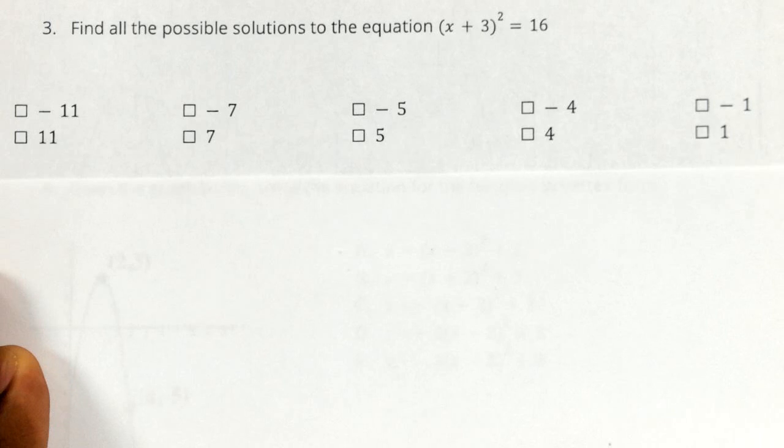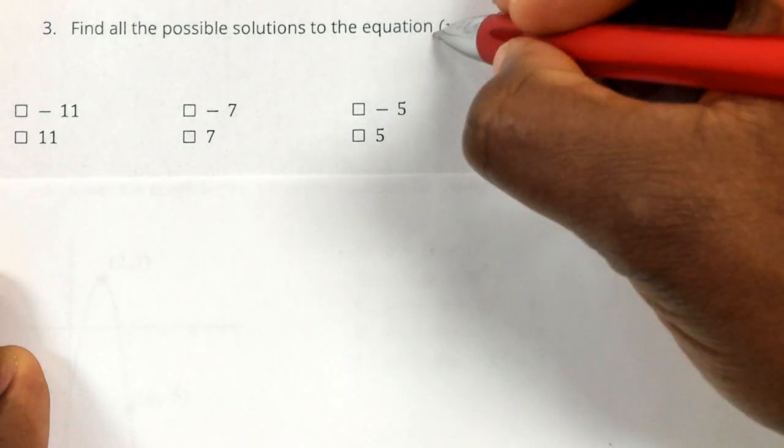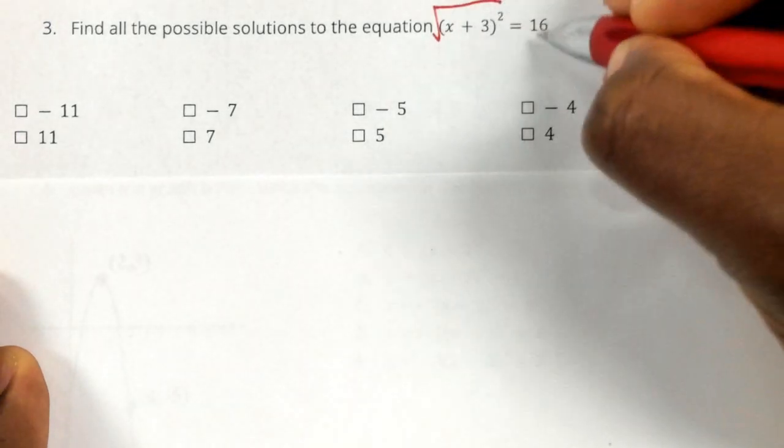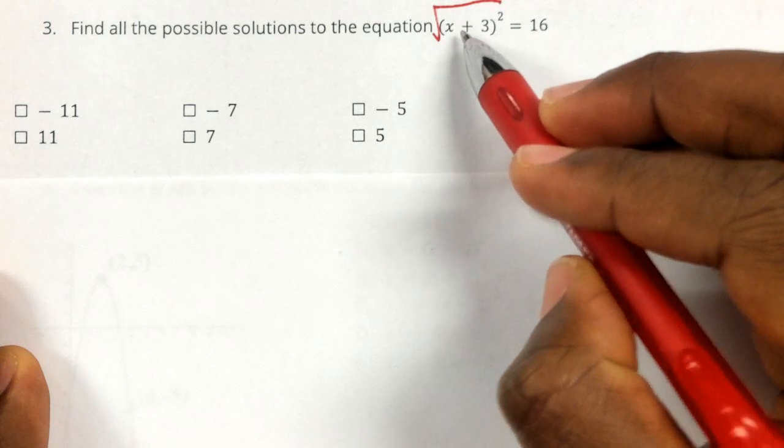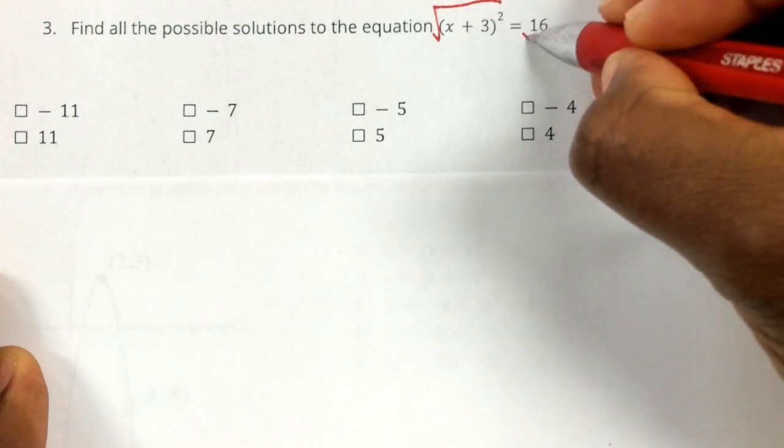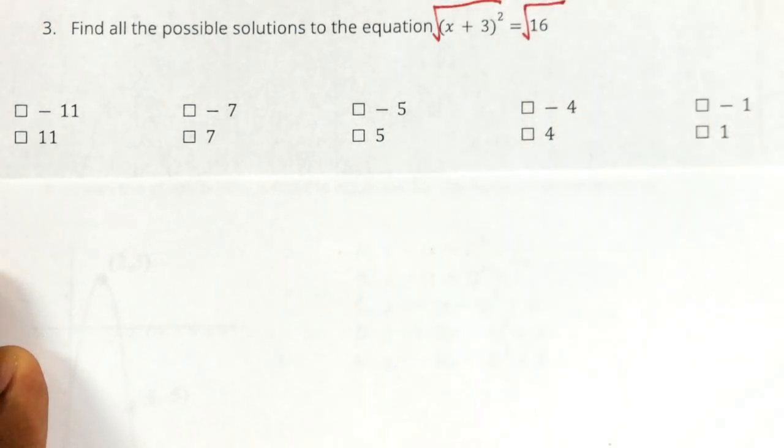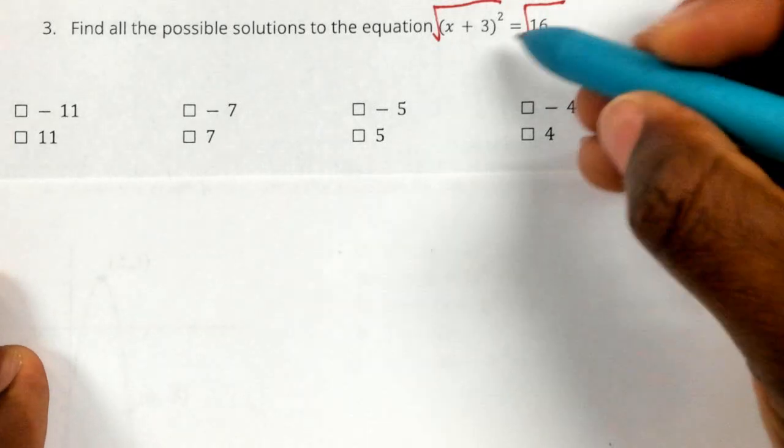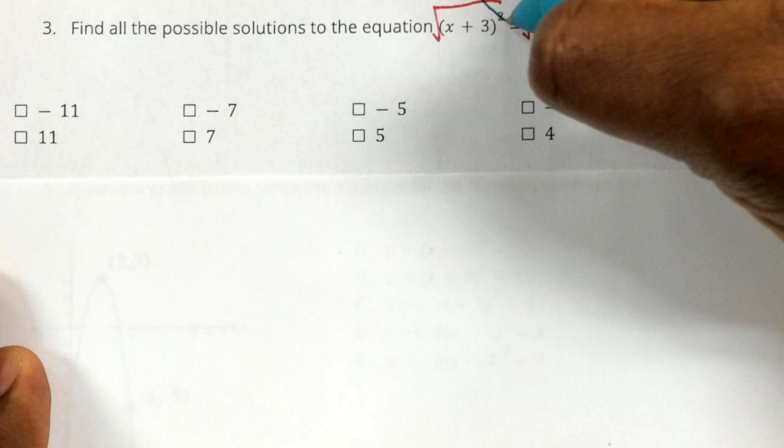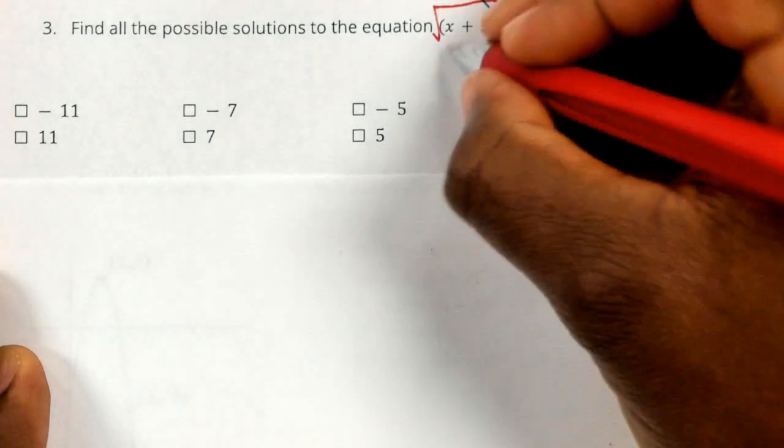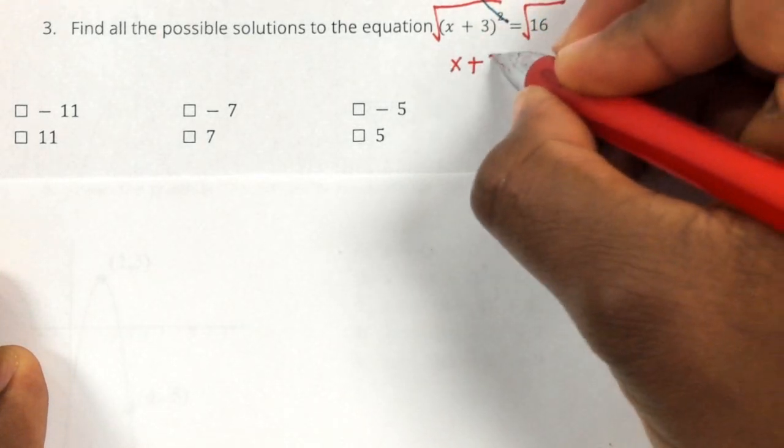To get rid of a squared, you do the opposite of squared, which is square root. And if you do it on one side, you have to do the same thing on the other side. So when you take the square root of something that is squared, they cancel each other out and you're left with X plus three.